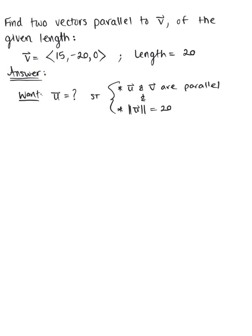We'll begin here by recalling what it means for two vectors to be parallel. So we can say that U and V are parallel if they are scalar multiples. That means U is equal to some scalar multiplied by vector V, where C is some real number.